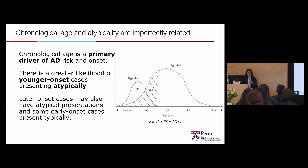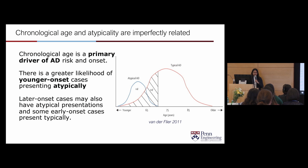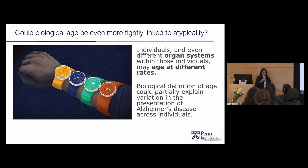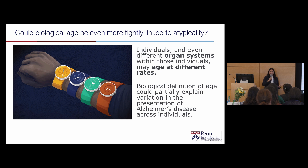This figure shows that the average age of a typical AD case is around 75, whereas an atypical AD case is younger. There's overlap, and an interaction with a particular gene that's influencing that. This leads to the idea of biological age — we think biological age could be more tightly linked to atypicality than chronological age. Biological age is the idea that individuals or organ systems might age at different rates. Your kidney might age at a different rate than your brain or your gastrointestinal system. Our goal is to create a biological definition of age that could partially explain the difference in presentation among Alzheimer's disease patients.